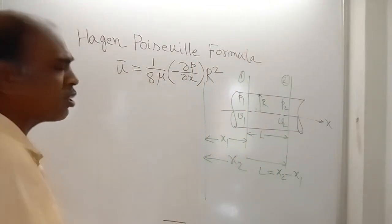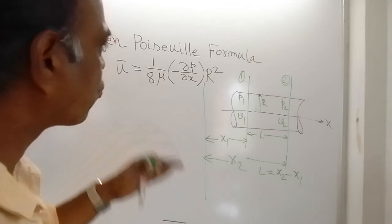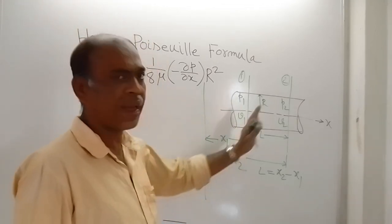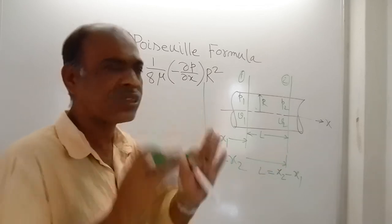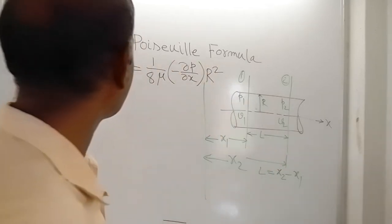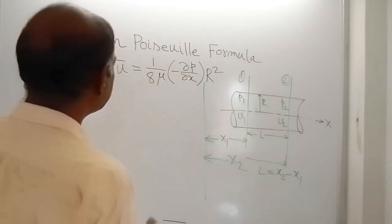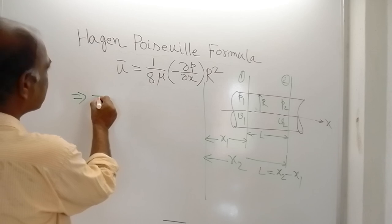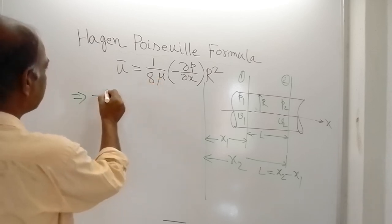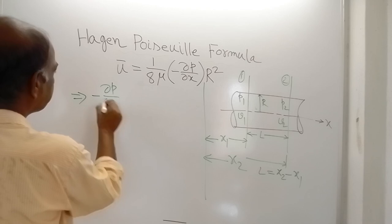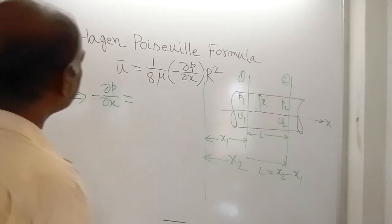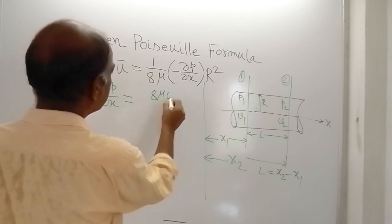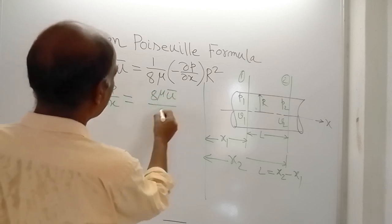Using this expression for average velocity, we are going to calculate the loss of pressure head between section 1 and 2, and that expression is known as the Hagen-Poiseuille formula. Using this, we can write that −dP/dX is equal to 8μU_bar divided by R².